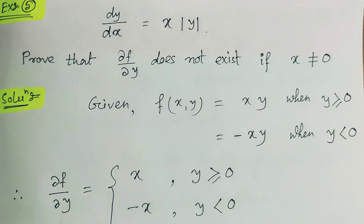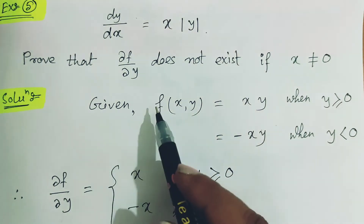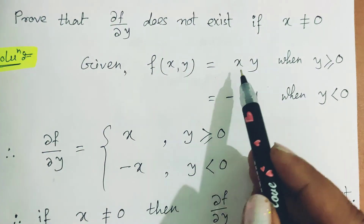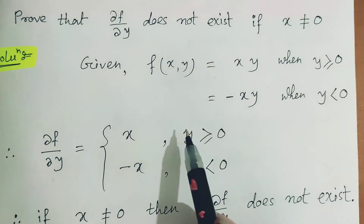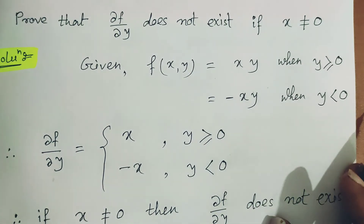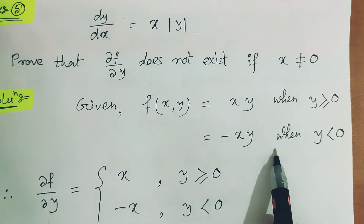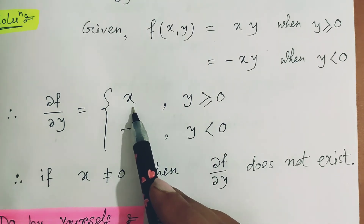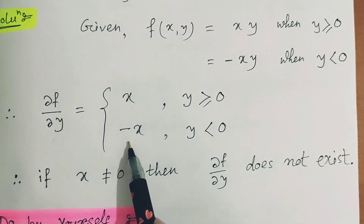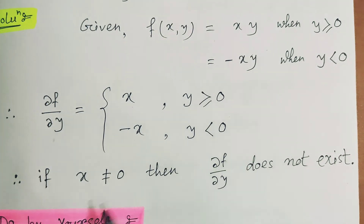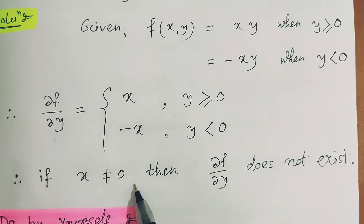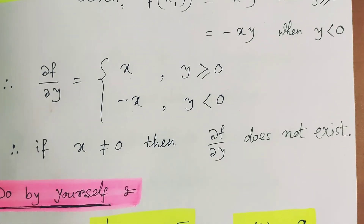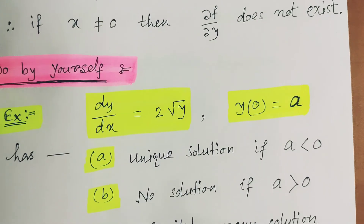Fifth example: dy/dx = x|y|. Here f(x,y) = xy when y ≥ 0 and f(x,y) = −xy when y < 0. Taking the partial derivative with respect to y gives x when y ≥ 0 and −x when y < 0. Therefore if x ≠ 0, then ∂f/∂y does not exist. So the solution is not unique for this given differential equation.